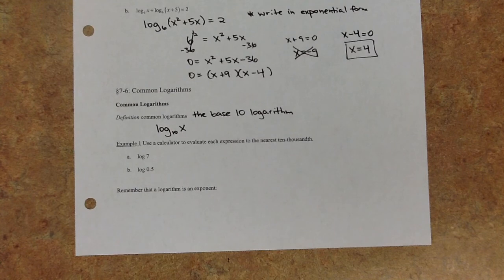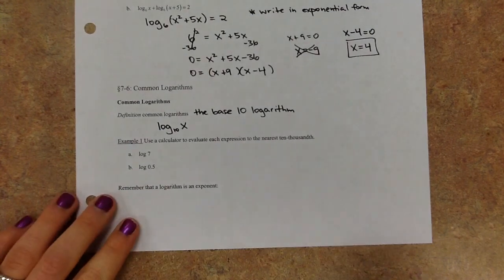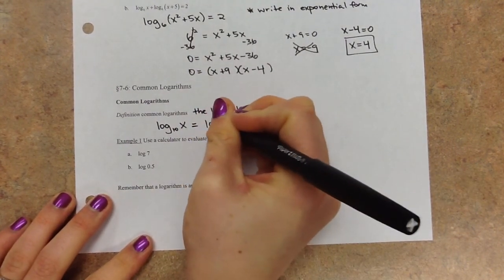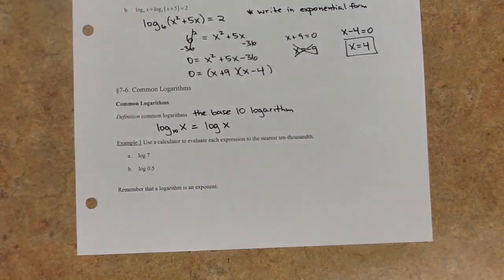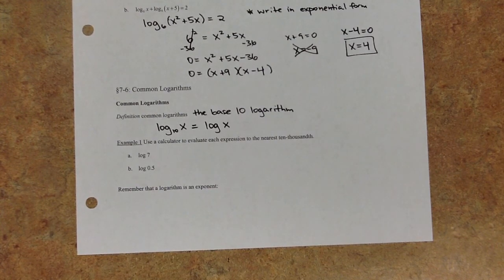Base 10 has really nice powers: 10, 100, 1,000, 10,000, etc. It's so common that they actually don't even write the base. So if you ever see just 'log of x', it's not missing something — it's literally so common that they only write log of x, and it means base 10.